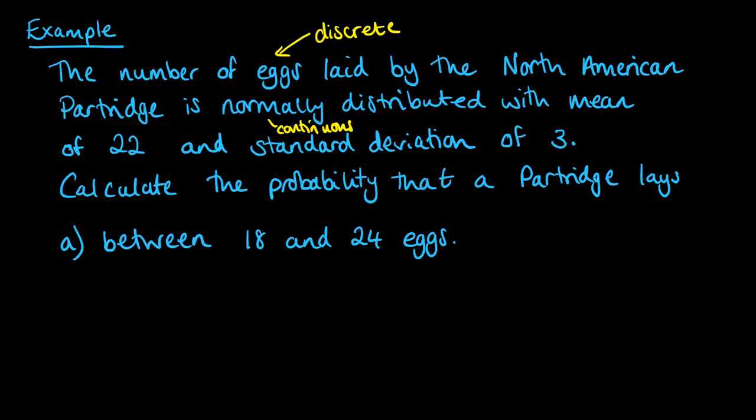Where we're using a continuous distribution to model something that's actually discrete, because we can only count whole numbers of eggs. And this is where the continuity correction comes in.